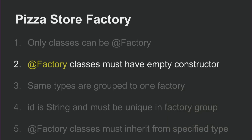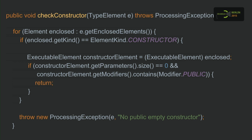Rule two: @Factory classes must have an empty constructor. We take the annotated element as a parameter and iterate over all enclosed elements in the class — variable elements like fields, methods, and so on. Once again, we don't use instanceof but use ElementKind to check if it's a constructor. If it is a constructor, we cast it to ExecutableElement and check the parameters and modifiers. Otherwise, we throw a ProcessingException.